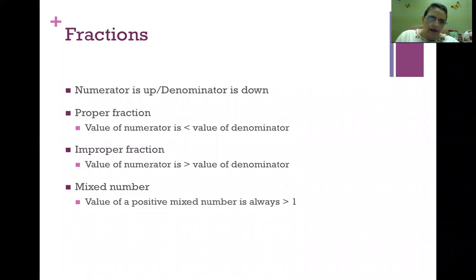Let's start with fractions. The numerator is the number on top of the fraction. The denominator is the number below. A proper fraction means the value of the numerator is less than the value of the denominator. An improper fraction is just the opposite—the value of the numerator is greater than the value of the denominator. A mixed number is a positive number with a whole number followed by a proper fraction.